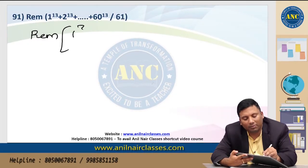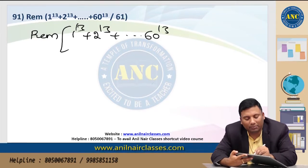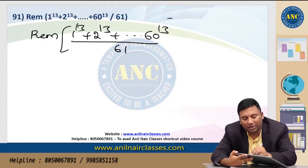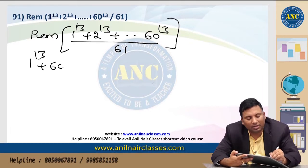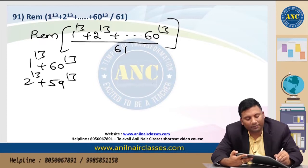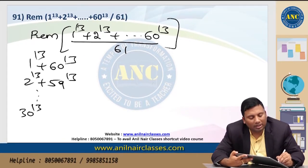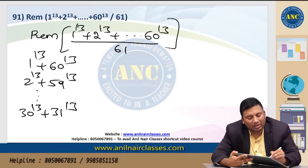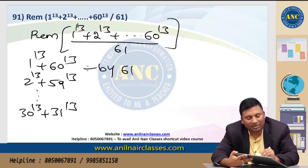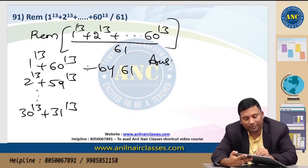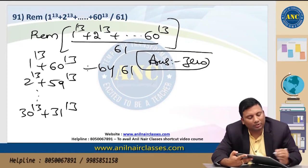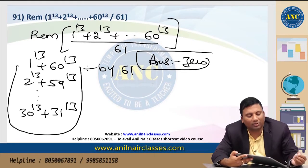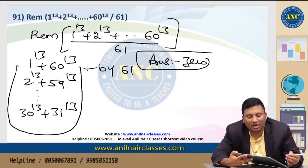Reminder 1: 1^13 + 2^13 + ... + 60^13 divided by 61. Pair them as: (1^13 + 60^13), (2^13 + 59^13), ..., (30^13 + 31^13). Each pair sums to a value divisible by 61 since a^n + b^n is divisible by (a + b) when n is odd, and each pair sums to 61. Answer is 0.